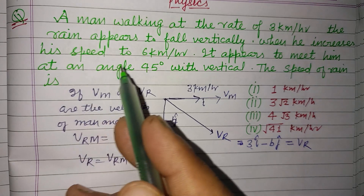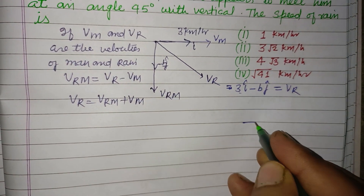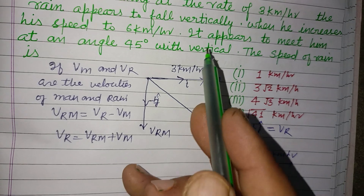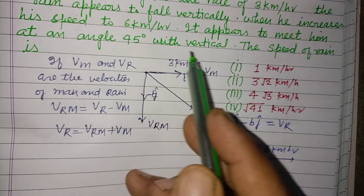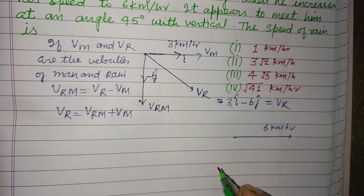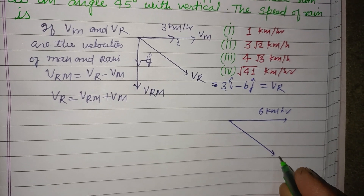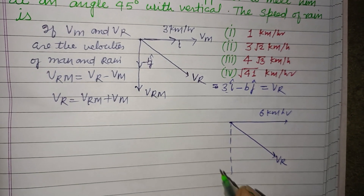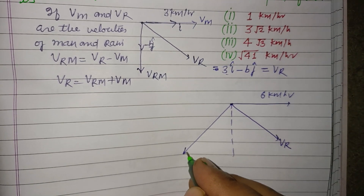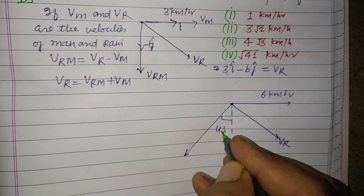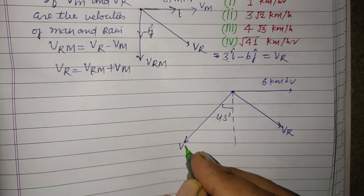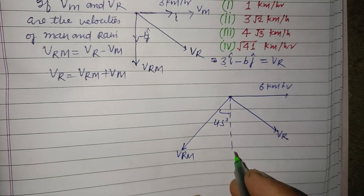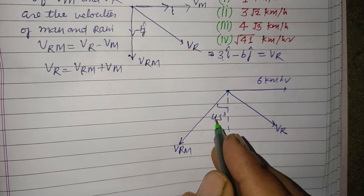Initially, when he increases speed to 6 km per hour, the man is now moving with 6 km per hour, and it appeared to meet him at an angle of 45 degrees with the vertical. So the relative velocity V_RM now makes an angle of 45 degrees with the initial vertical direction.